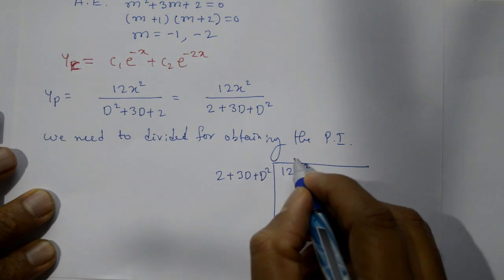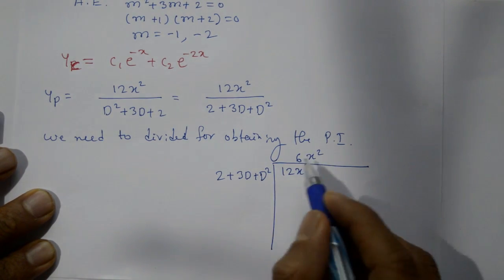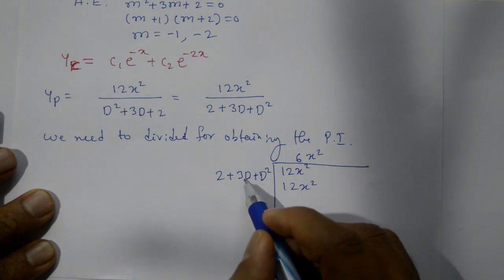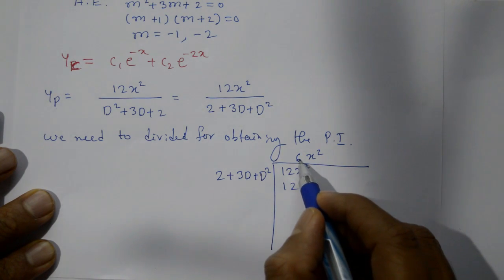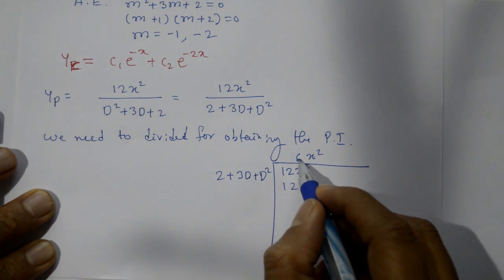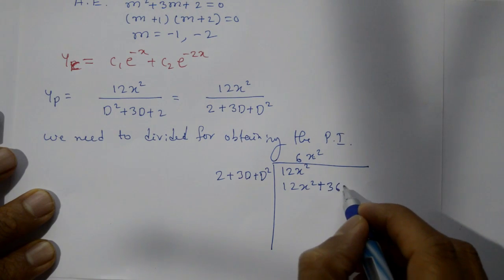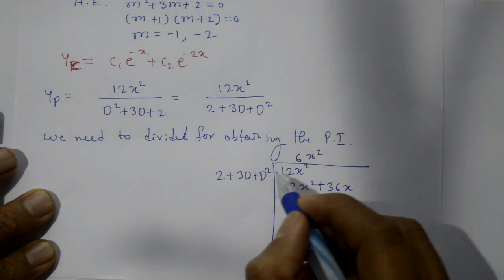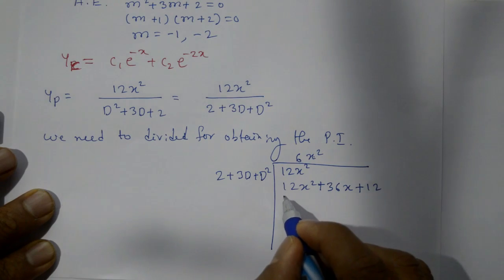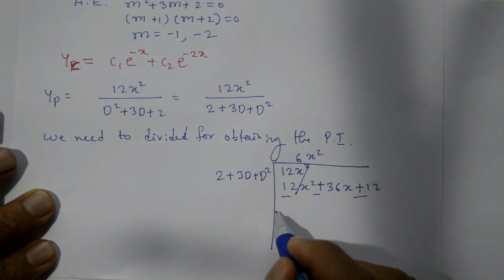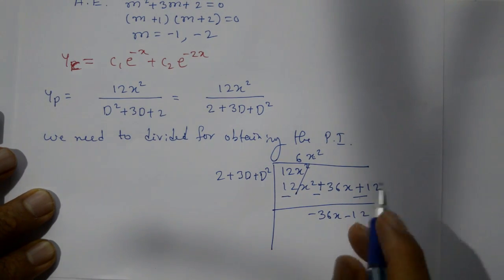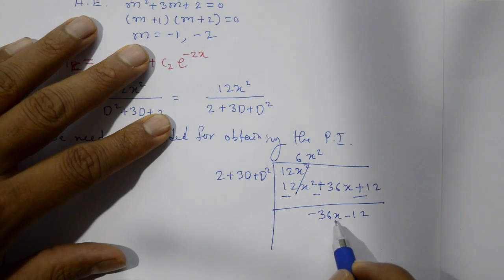Multiply 6x² by 2 gives 12x² — cancel. Multiply 6x² by 3D: differentiate x² to get 2x, so 18 × 2x = 36x. Multiply by D²: differentiate twice to get 2, so 12. Change the sign: subtract −36x and −12. Cancel, leaving −36x − 12.